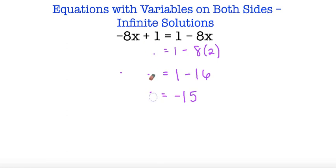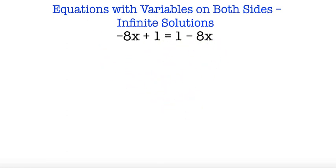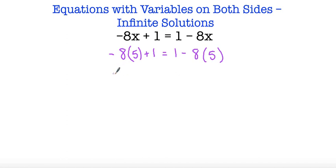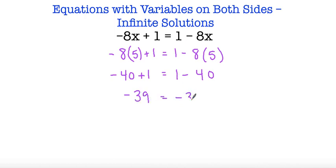And if we substitute for another number, for example 5: negative 8 times 5 plus 1 is equal to 1 minus 8 times 5. Negative 8 times 5 is negative 40, plus 1 equals 1 minus 40. So negative 40 plus 1 is negative 39, equal to 1 minus 40 which is negative 39. So whatever number we substitute for x will always be true.